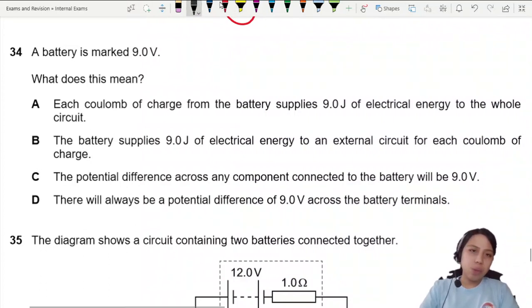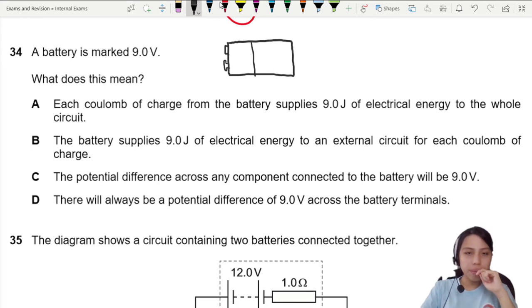What does it mean when the battery is marked 9 volts? If we have a battery, let's say a 9 volt battery, usually it's a rectangle one. One side is like that, the other side is like this. Marked 9 volt means on the battery's body, they write there 9.0 volts. That 9.0 is what the EMF is.